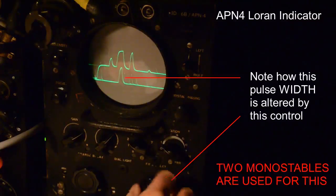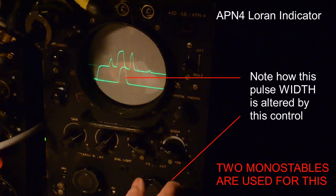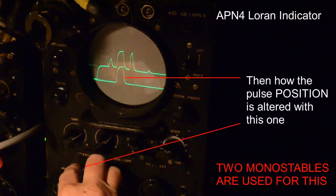Note how the knob on the right of the indicator varies the width of the pulse on the bottom line, whereas the left knob varies the actual position of the pulse on the line itself.